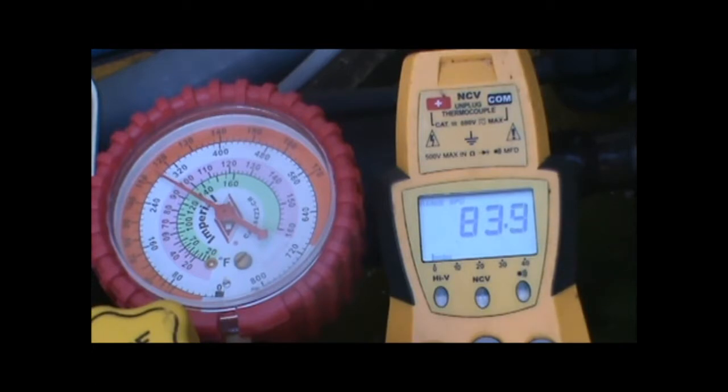When you have proper sub-cooling levels like this, it indicates that the refrigerant has condensed back down into liquid. There's no vapor, and we have a solid column of liquid going back to the evaporator coil through the metering device.